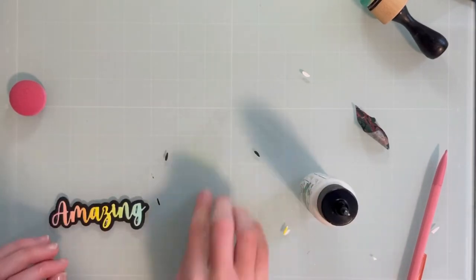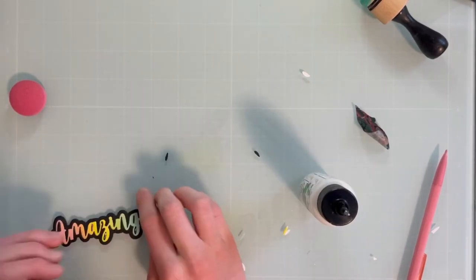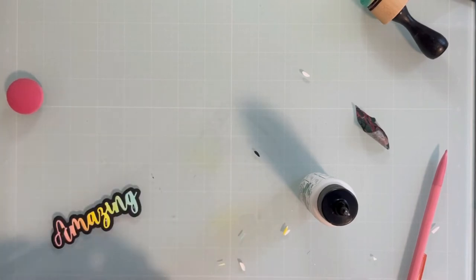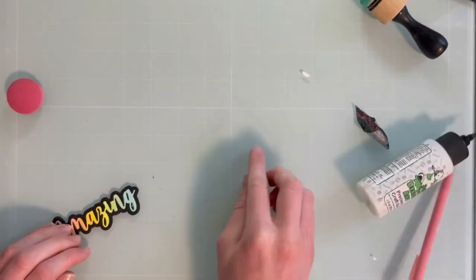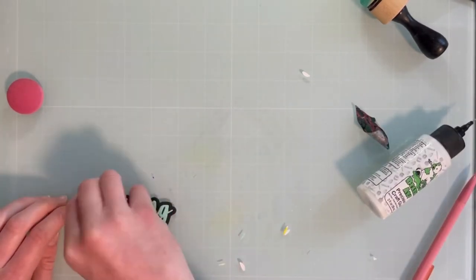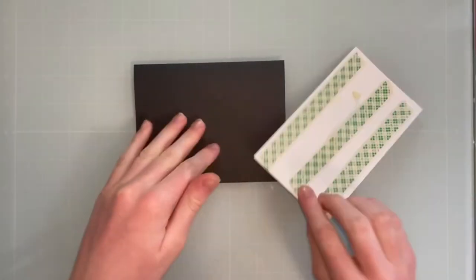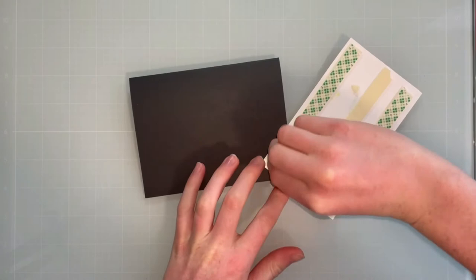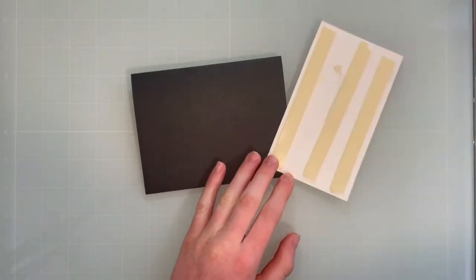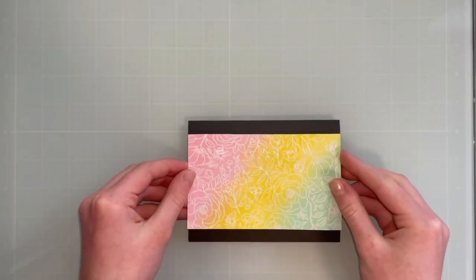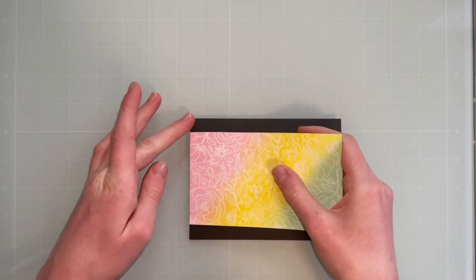I will then inlay all of those little pieces into those little spots on the sentiment there. And this just gives a little bit of a different look and helps to coordinate your sentiment with your background stamp.